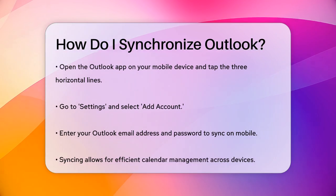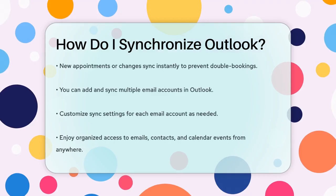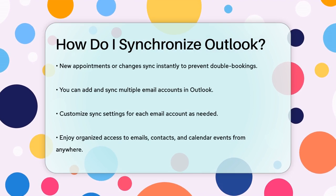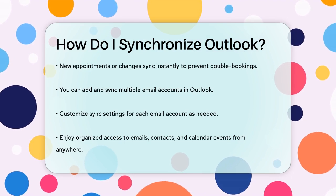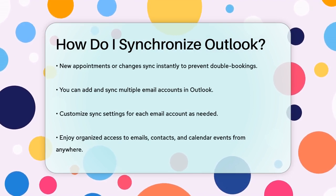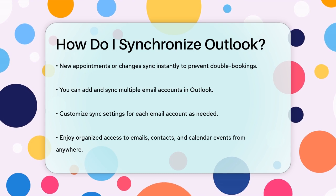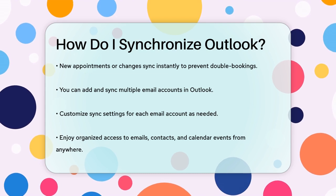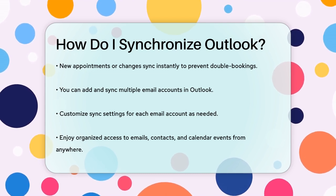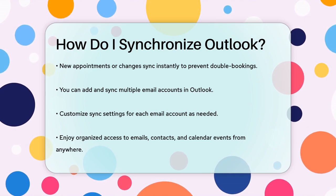For those who use multiple email accounts, you can add and sync all of them within Outlook. On your computer, go to File, Add Account, or on your mobile device, go to Settings, Add Account. Enter the details for each account and you can customize the sync settings for each one.